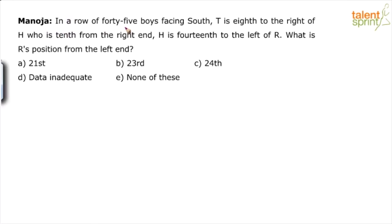In a row of 45 boys facing south, T is 8th to the right of H, who is 10th from the right end. H is 14th to the left of R. What is R's position from the left end?